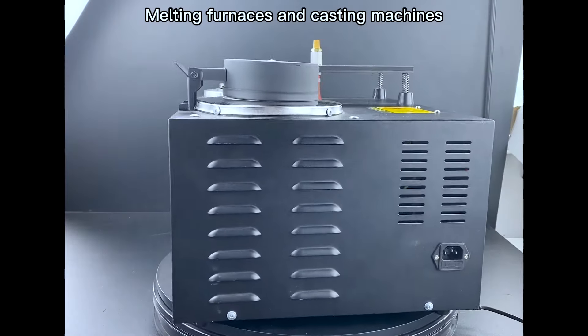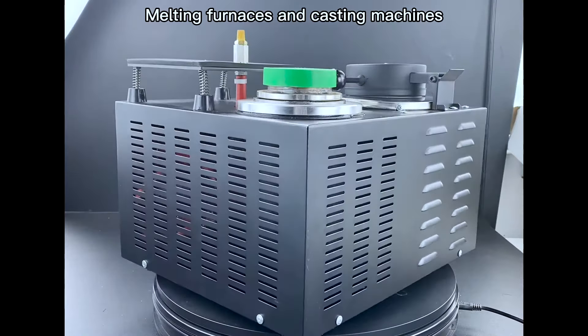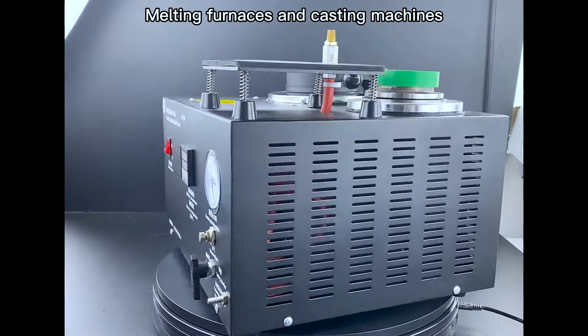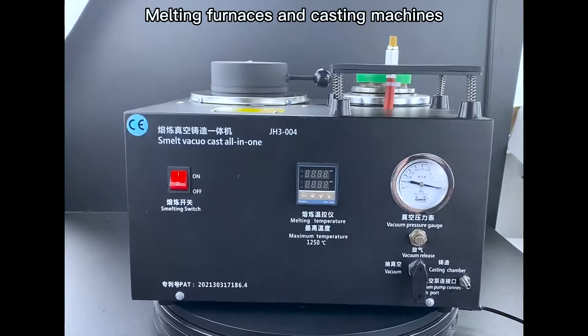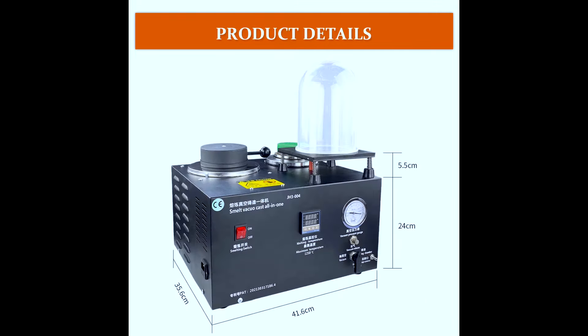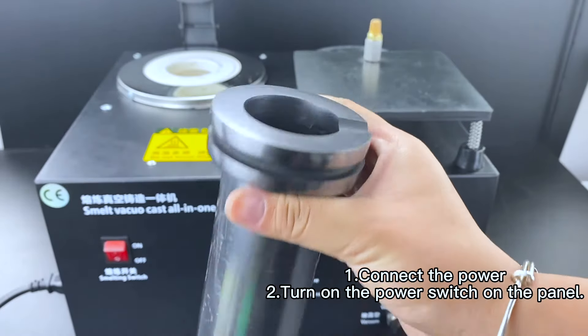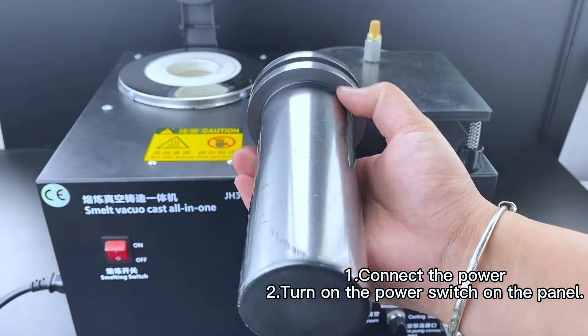Melting Furnaces and Casting Machines. To melt: 1. Connect the power. 2. Turn on the power switch on the panel.